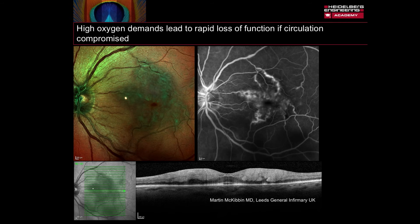The high metabolic demand of the retina means that if blood supply is compromised, even for a short period of time, then damage occurs to the retinal tissues. This can be seen in a retinal arterial occlusion in this slide, where we can see inner retinal edema on the multicolour image, an infarcted macula on the fluorescein image, and increased reflectivity of the inner retina corresponding to inner retinal edema and ischemia on the OCT scan.